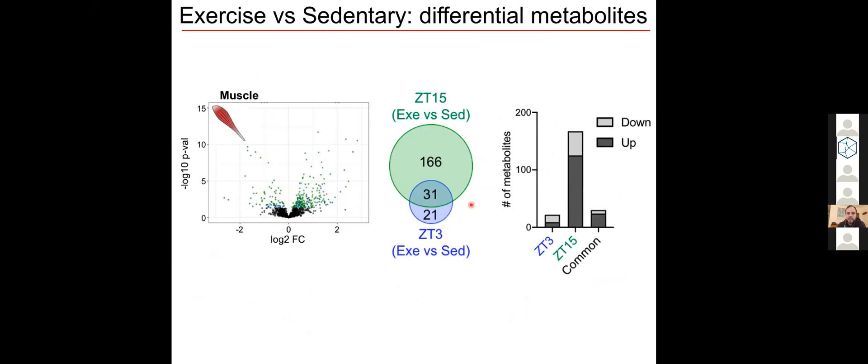But when we look at each individual tissue, we can see unique exercise responses according to the time. For example, exercise performed at night is altering 197 muscle metabolites compared to the sedentary controls, whereas only 52 metabolites are impacted by exercise during the day.